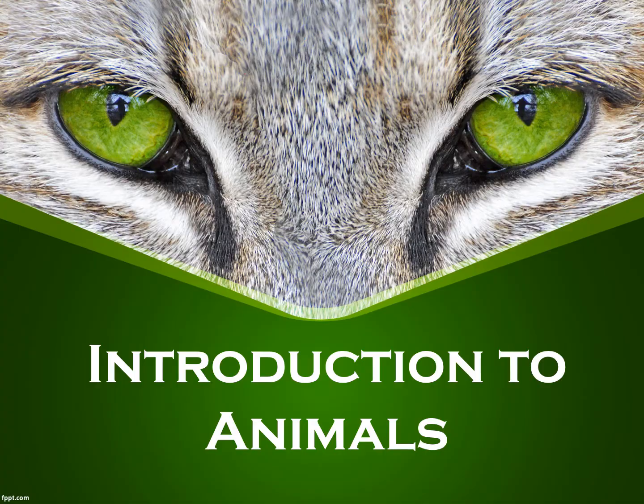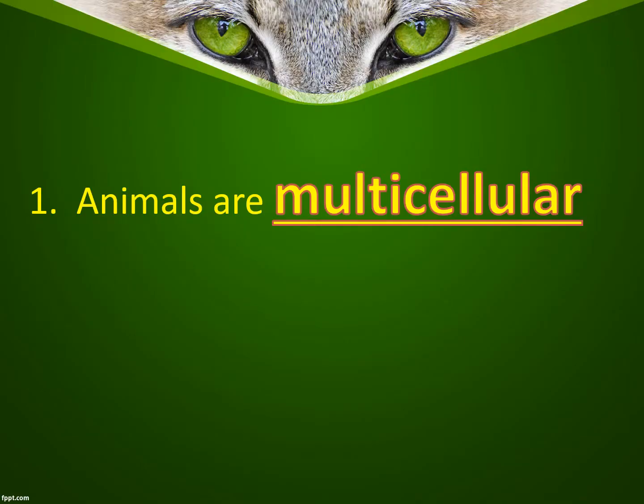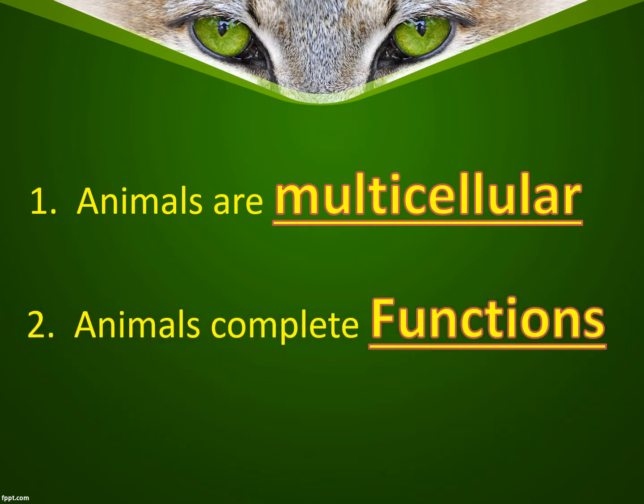The first thing you have to know and remember is that animals are multicellular, which means they're made up of more than one cell. The animals that we're going to look at are going to be made up of thousands and trillions of cells, just like we are.